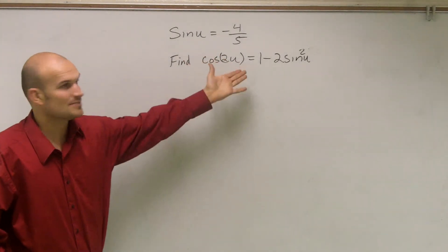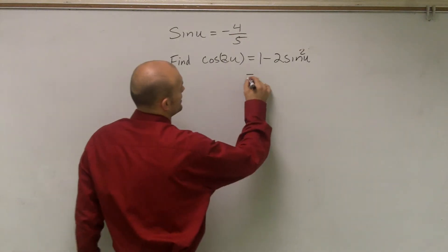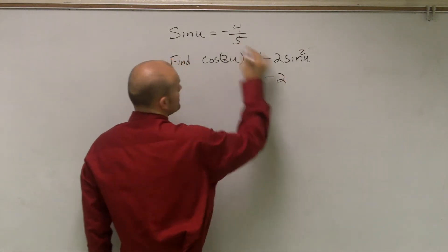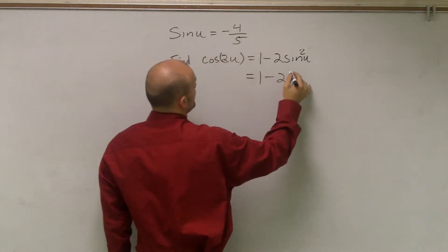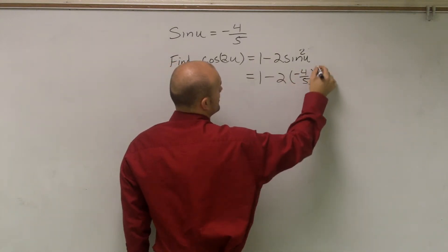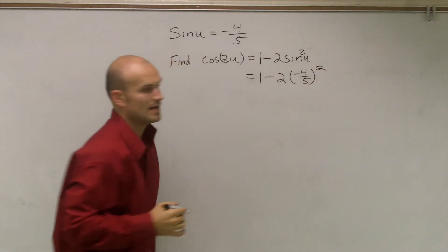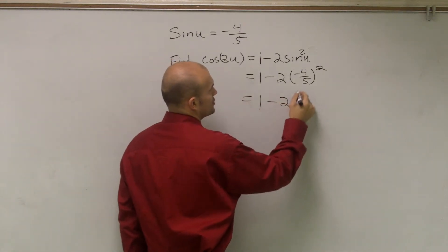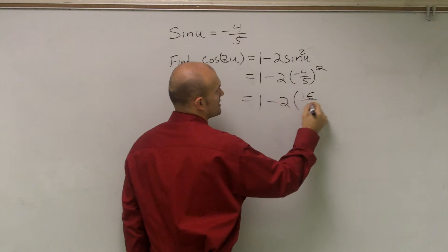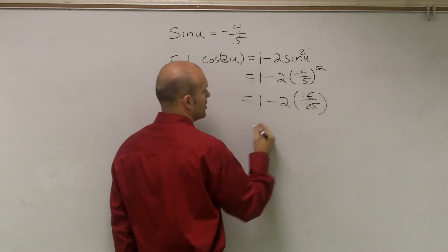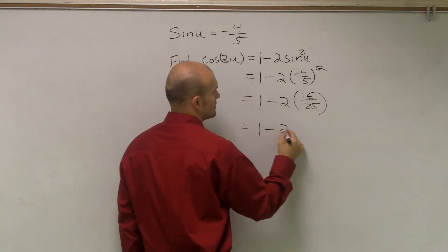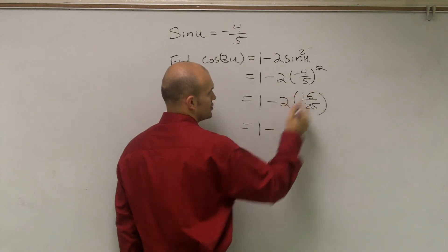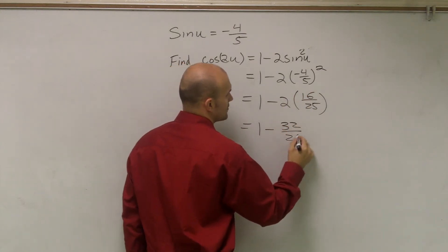I can simply plug it in. So here I'll use 1 minus 2 times sine of u, which is negative 4 over 5. Remember, we've got to square it. So I'll square the top. That equals 1 minus 2 times 16 over 25, which is 32 over 25.